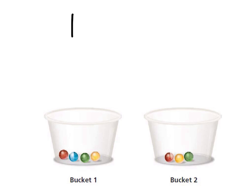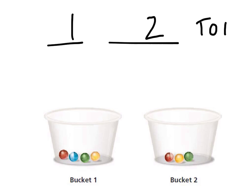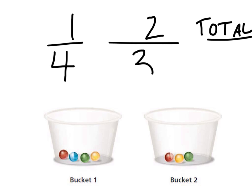So let's look — we've got two buckets, and this will give us a total number of outcomes. How many marbles are in bucket one? We're going to choose a marble from bucket one — there are four marbles in bucket one. How many marbles are in bucket two? Three. So we just multiply these together, and that tells us there are 12 possible outcomes.